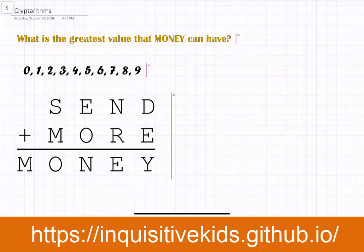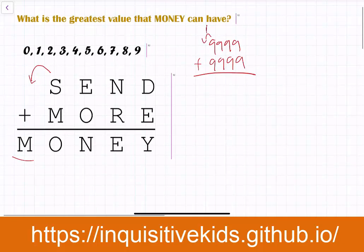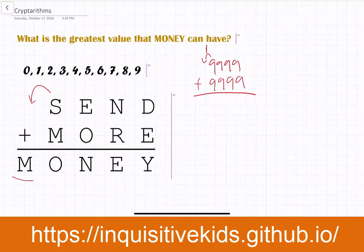This almost looks like someone has written you a message — it says SEND MORE MONEY. The first thing we notice is that two 4-digit numbers added together produced a 5-digit number, which means a 1 was carried to the ten-thousands place. Even the biggest four-digit numbers added together can only carry a maximum of 1.